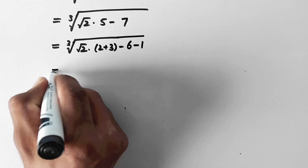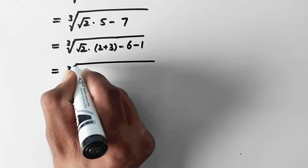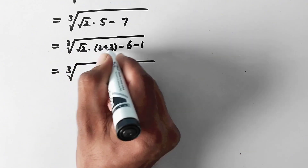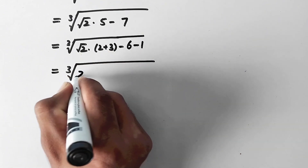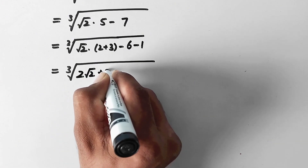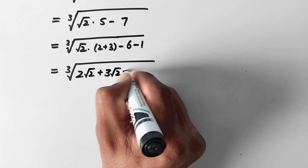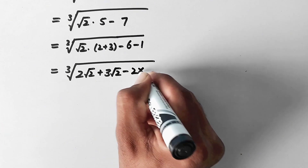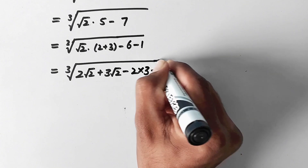And now here, cube root of square root 2 is multiplying to these two values. So by distributing, it will be 2 times square root 2, plus 3 times square root 2, minus 6 — which can be written as 2 multiplied by 3 — and minus 1.